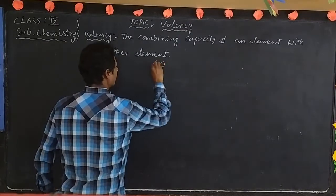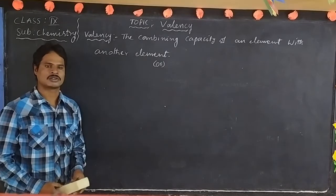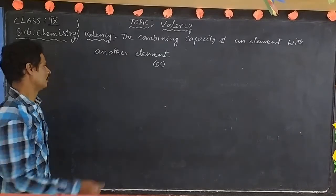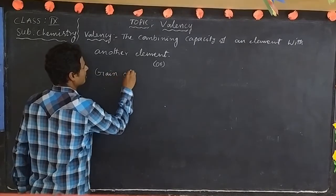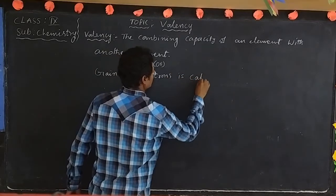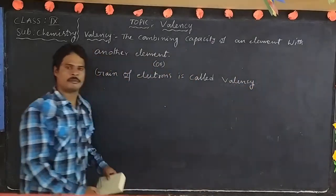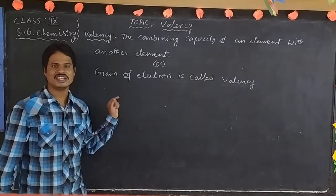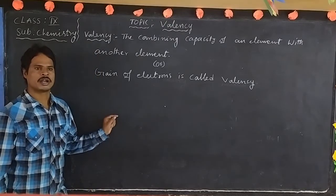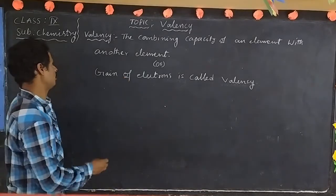Another definition: gain of electrons is also called valency. An atom gains electrons to get the nearest inert gas electronic configuration. Now check it according to this definition with some examples.